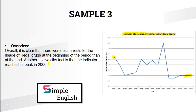For the second sentence, since this graph has nothing related to position or rank, the feature would be when the graph reached its peak. 'Another noteworthy fact is that the indicator reached its peak in 2000.' The graph peaks right there — so that's the feature for a single line graph.